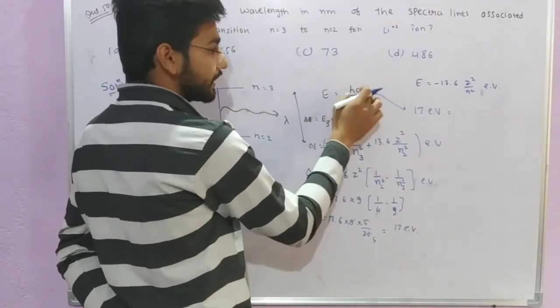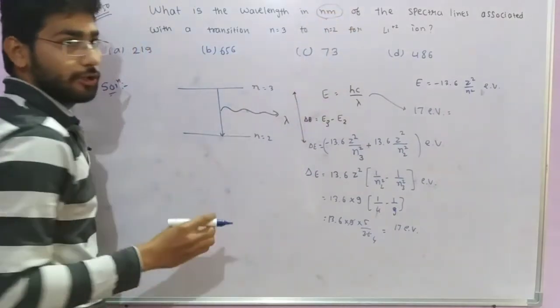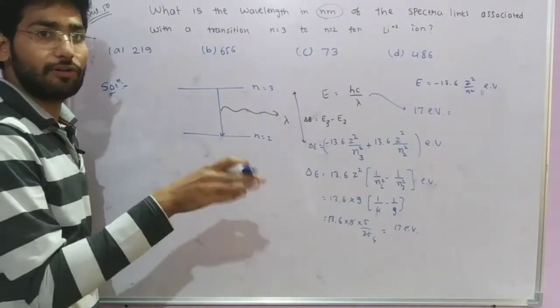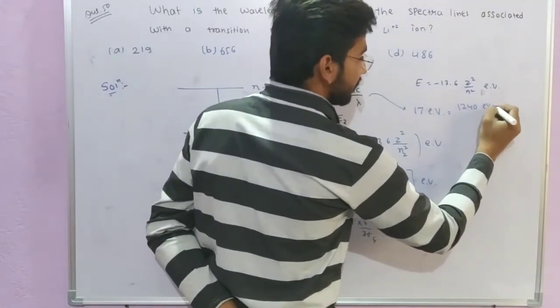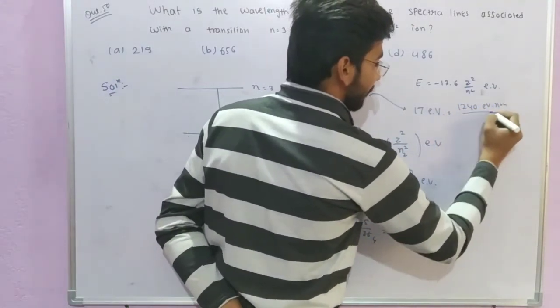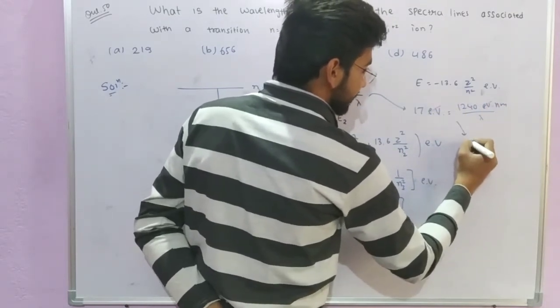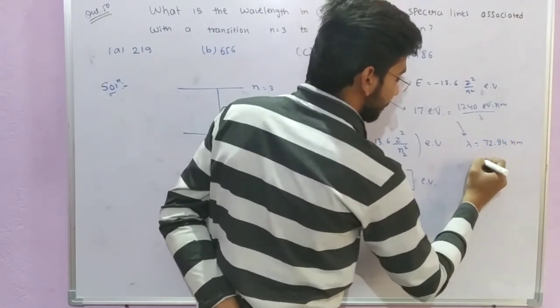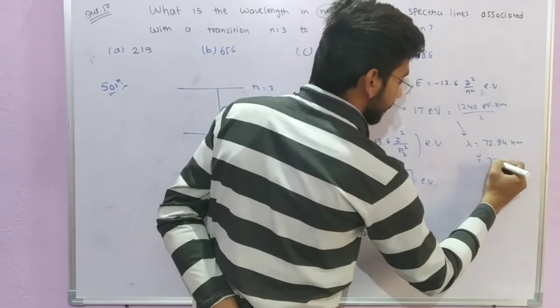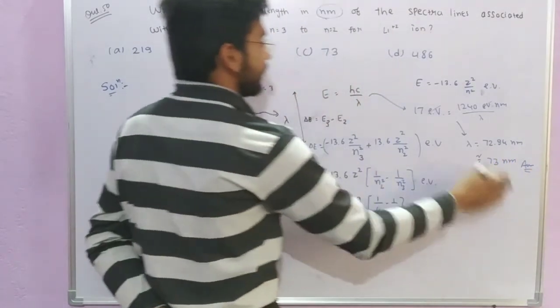To calculate lambda in nanometers, use hc value which is 1240 electron volt nanometer upon lambda. Electron volts cancel out, lambda equals 1240 divided by 17, which gives 72.94 nanometers. Approximately 73 nanometers. So here is your answer, option C is the correct option.